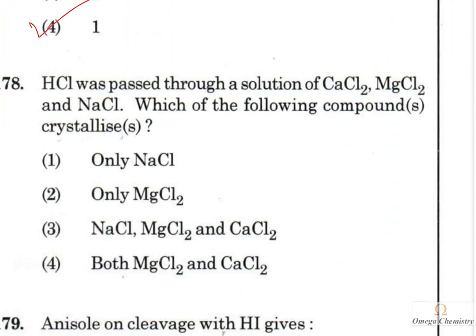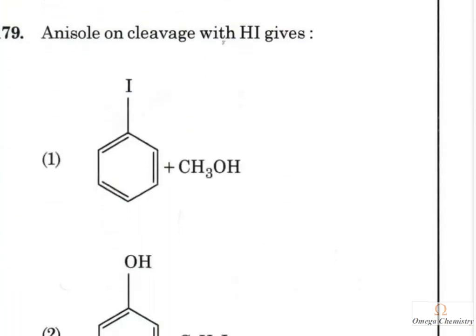Question 161: Hydrochloric acid was passed through a solution containing calcium chloride, magnesium chloride, and sodium chloride. In qualitative salt analysis, calcium is group 5 and magnesium is group 6, but HCl is added in the first group analysis. The compound that crystallizes is the one whose ionic product exceeds its Ksp — that is sodium chloride, which will be precipitated.